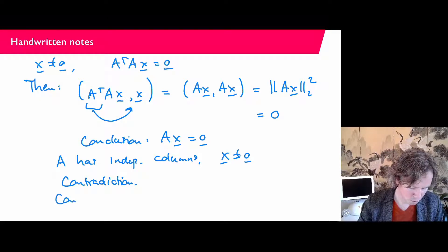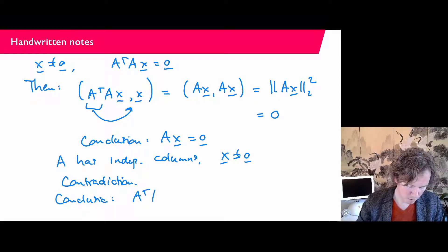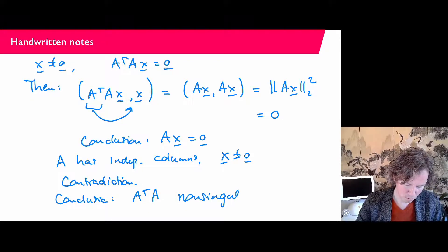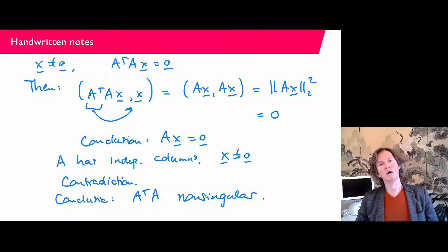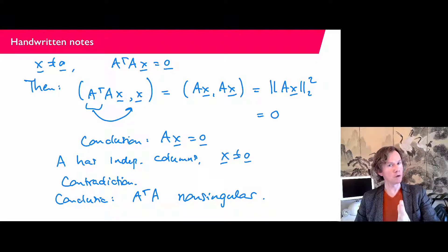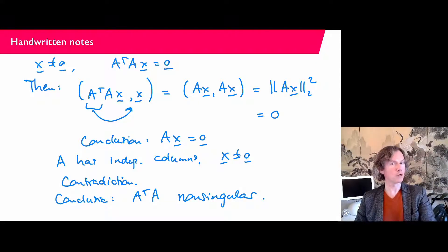The final conclusion is that A-transpose A is non-singular. So if the matrix has independent columns, the normal equations of Gauss will have a unique solution.